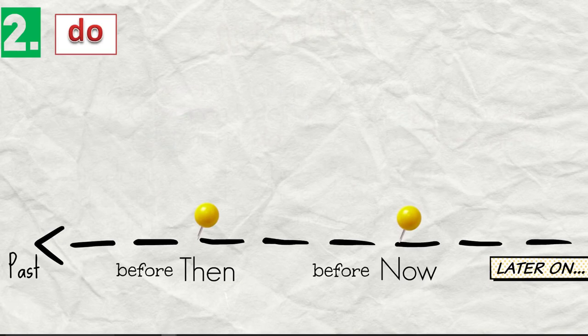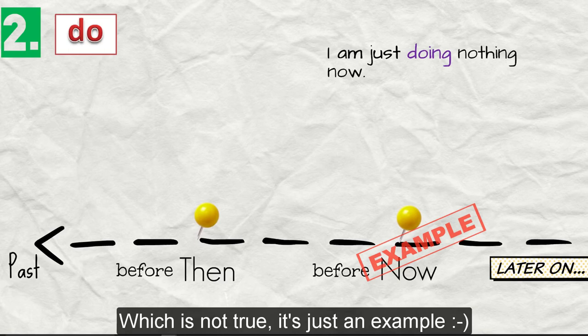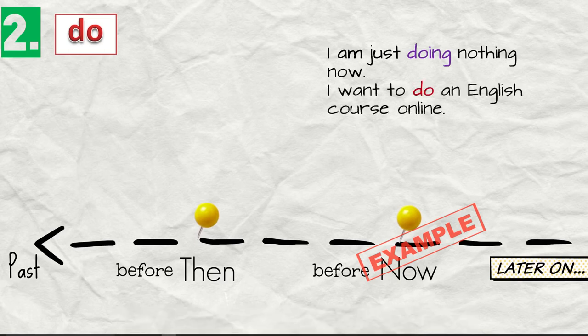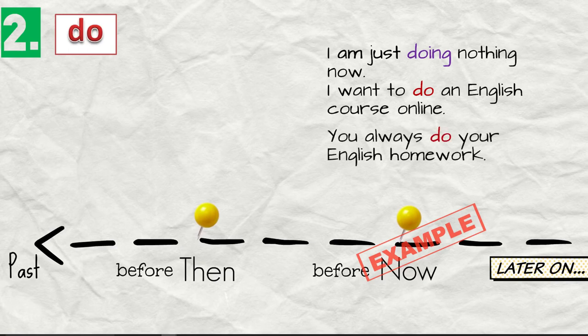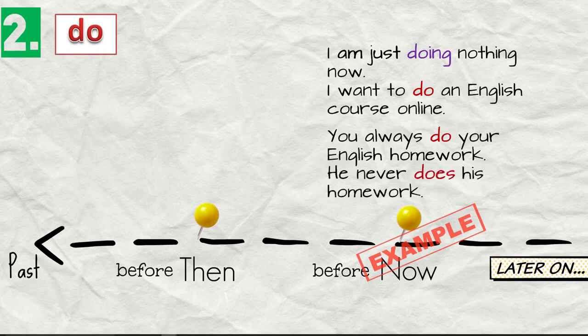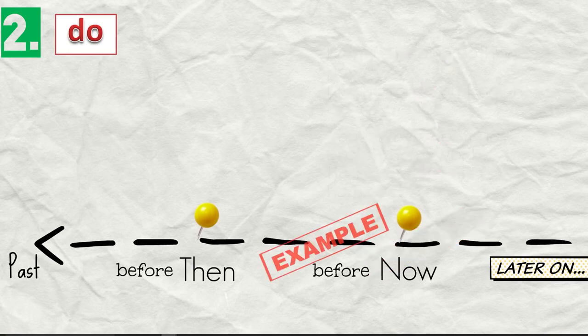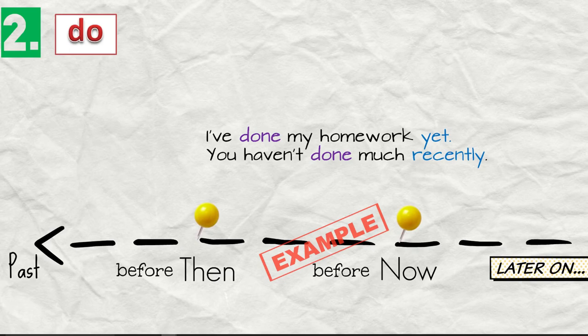And again let's have examples. I'm just doing nothing now, which is not true, but it's just an example. I want to do an English course online. You always do your English homework. He never does his homework. So this is the present, now. Now we have examples. I've done my homework yet. You haven't done much recently. I've been doing nothing with my English for years.